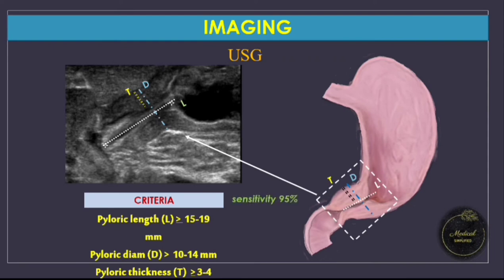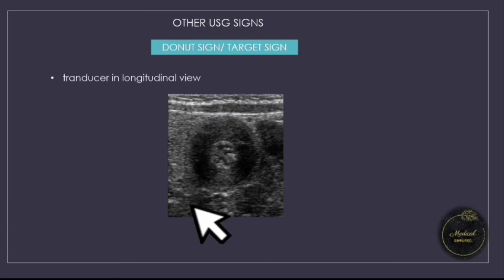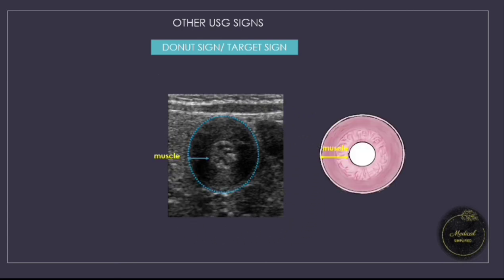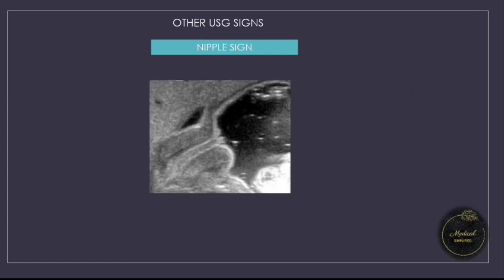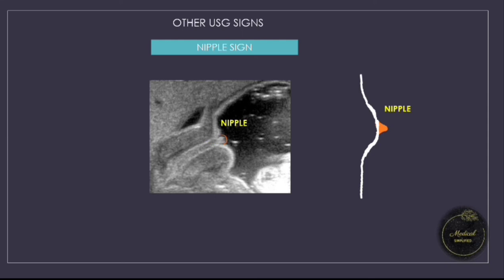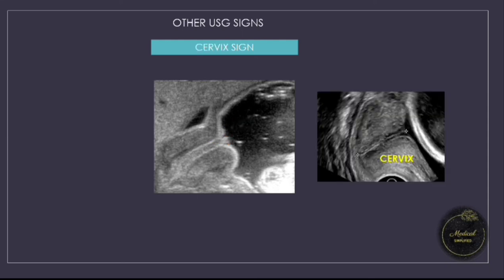This criteria has a sensitivity of 95%. Other signs on ultrasound include the donut sign or target sign, seen by placing the transducer to give a longitudinal view — the outer ring is formed by the thickened muscle and the inner circle by collapsed mucosa. Lesser known signs include the nipple sign, where collapsed mucosa projects into the proximal antrum resembling a nipple, and the cervix sign, as this view also resembles a female cervix.